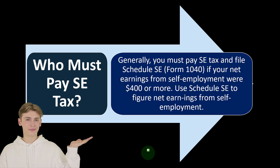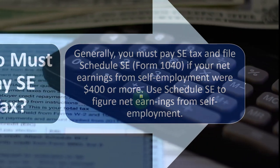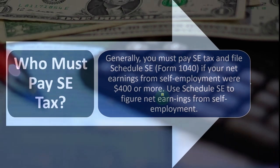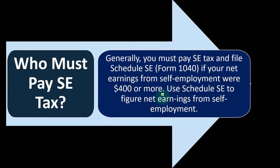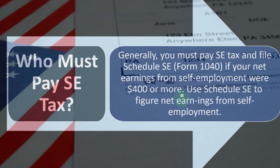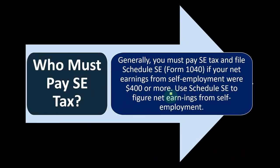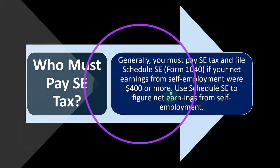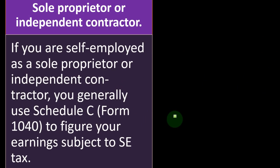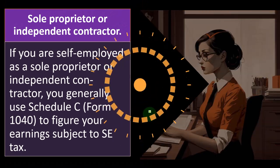Generally, you must pay SE tax and file Schedule SE, Form 1040, if your net earnings from self-employment were $400 or more. If you have a loss on your Schedule C income, you're not going to have self-employment tax, because it's based on your income. The net income from the Schedule C is the starting point to calculate Social Security and Medicare. Use Schedule SE to figure net earnings from self-employment. If you are self-employed as a sole proprietor or independent contractor, you generally use Schedule C, Form 1040, to figure your earnings subject to self-employment tax.